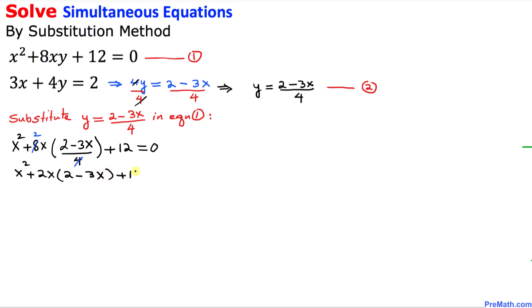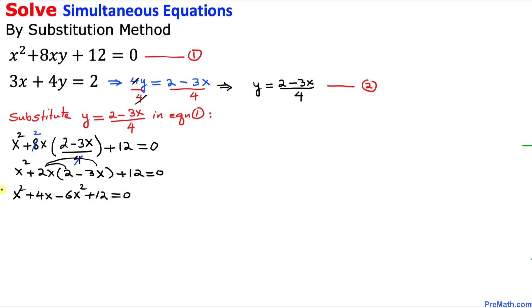Let's simplify further. We have x squared, and then we distribute: that becomes 4x minus 6x squared, plus 12 equal to 0. Now combining like terms, this gives us negative 5x squared plus 4x plus 12 equal to 0.